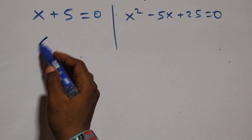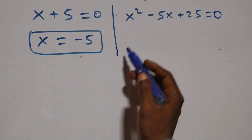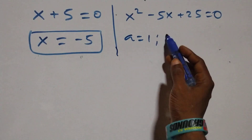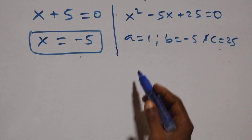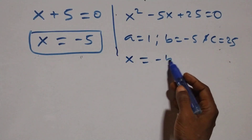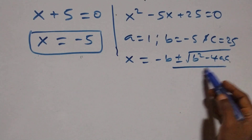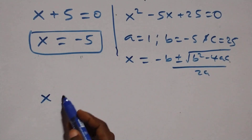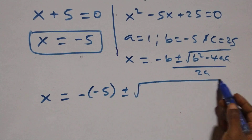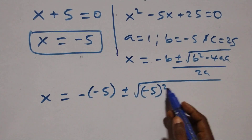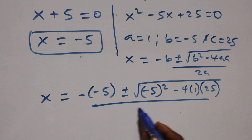Solving on this side, we have x equals minus 5, which is the only real solution here. And here we have a quadratic equation where a equals 1, b equals minus 5, and c equals 25. Applying the quadratic formula, x equals minus b plus or minus square root of b squared minus 4ac over 2a. This becomes x equals minus of minus 5, plus or minus square root of minus 5 squared minus 4 times 1 times 25, over 2 times 1.